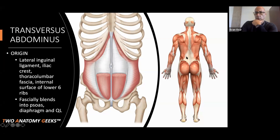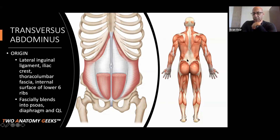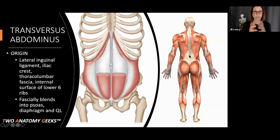If you notice this image here, those are your lats, which also insert into your thoracolumbar fascia. There are actually three layers of thoracolumbar fascia. You'd have to remove the lats, then remove the second layer, and the transverse abdominus comes off the deepest layer of thoracolumbar fascia — underneath the lats and relatively underneath the erector spinae as well. Peel off the lats, peel off the erector spinae, and that third layer is where your transverse abdominus attaches.